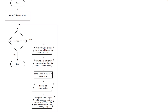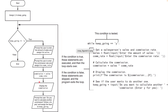The first check is: if keep_going is equal to 'y', go through the loop. Inside the loop, prompt the user to enter the amount of sales, receive that value, receive the commission rate, calculate and display the commission. At the end of the loop, we ask the user if they have another salesperson to process — do you want to calculate another commission? Enter 'y' for yes or 'n' for no — and assign that input back to keep_going. As long as the user enters 'y', the loop repeats; once they enter 'n', it exits.